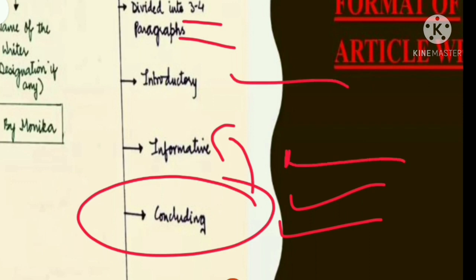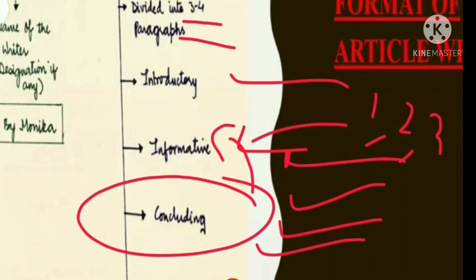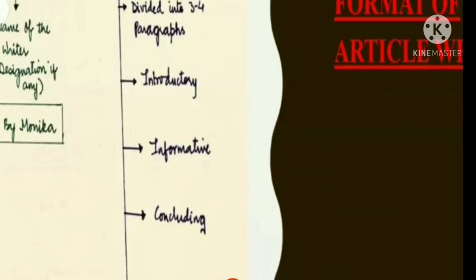Ideally there should be three paragraphs: intro, information regarding the topic, and conclusion. But if you wish, you can segregate the information section into different paragraphs — you can have two or three paragraphs there as well. Keep in mind the word limit. In the last paragraph, according to your intellect, you should find the solution to the problem mentioned in the information section.